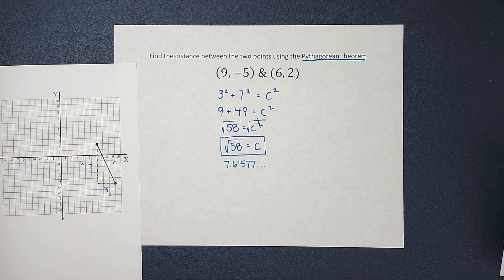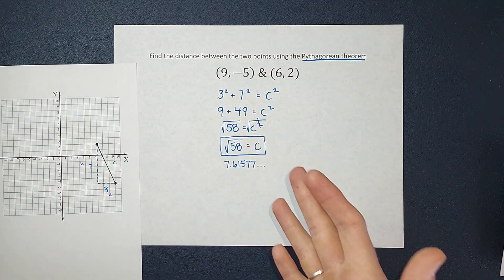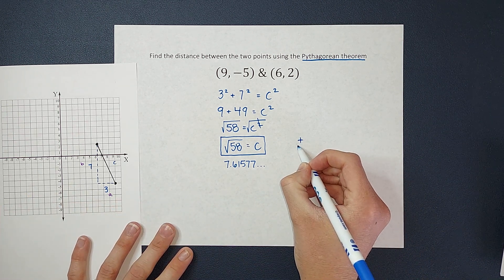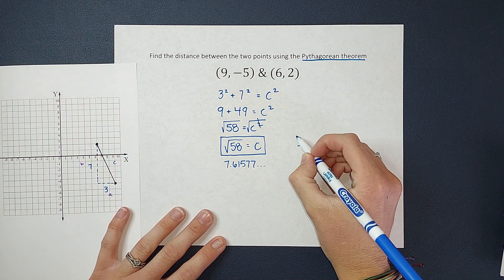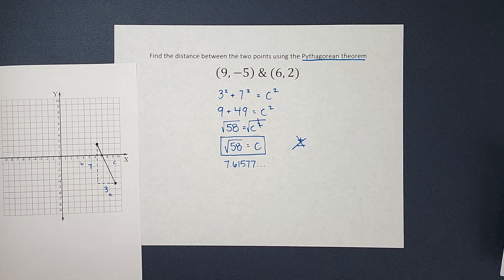One other thing I wanted to point out: typically when we introduce a square root into an equation like this, we usually have our answer include a plus or minus. But I didn't do that this time because we were looking for a distance, and distance is always positive — you can't go a negative distance. That's why I did not include the plus or minus. I hope this made sense. If you need to check out any of those other videos, they should be linked in the corner. Thanks, bye.